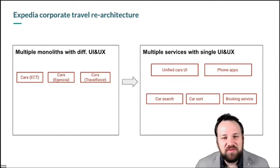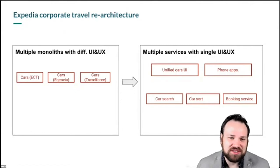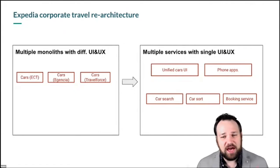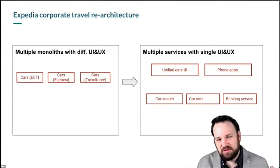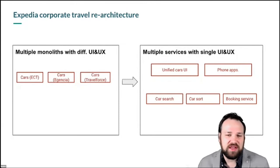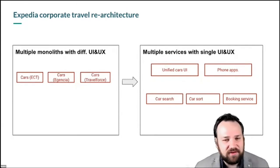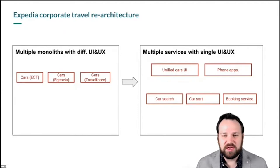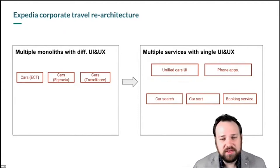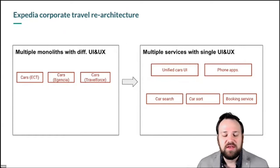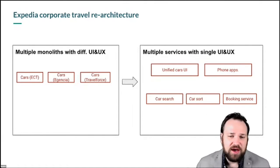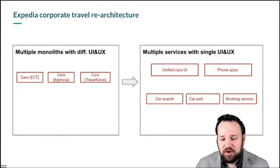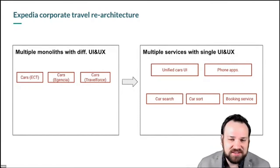A few years ago, Expedia went through this process where they had multiple monoliths, which had happened because they'd acquired several companies. They had different car services they'd acquired with completely different monoliths, different UIs, different UXs, different databases. They went through a big re-architecture to make all of these into a group of microservices they could use across their entire platform. Anybody that's done this kind of work before knows that it's fairly complex to achieve.